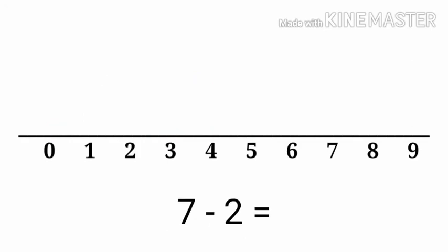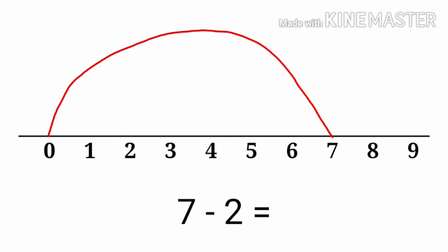Now let's see another question. It's written 7 minus 2 equals to how much? Same method. First, the first number is 7, so we draw a line from 0 to 7 on the number line. After this, we look at the back number, which is 2. So we will do backward counting 2 times: 1, 2. After backward counting, we land on number 5. So the correct answer is 5.